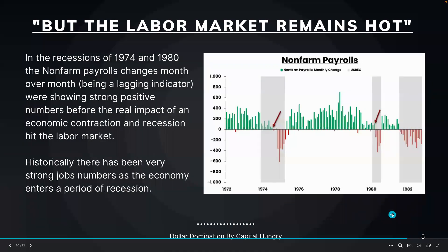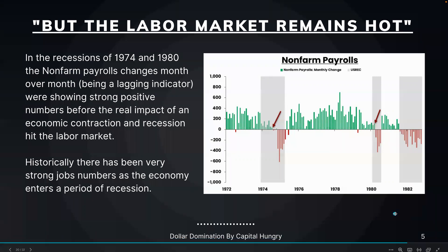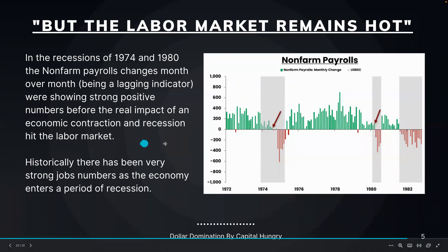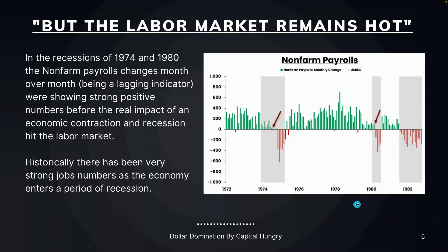But the labor market remains hot. In the recessions of 1974 and the early 1980s, non-farm payroll changes month-over-month, being a lagging indicator, were showing strong positive numbers before the real impact of the economic contraction and recession hit the labor market. Historically, there have been very strong job numbers as the economy enters a period of recession. We saw this in 1974 before entering the late recession in 1975, and again in the early 1980s, before a decrease in job creation in 1982.